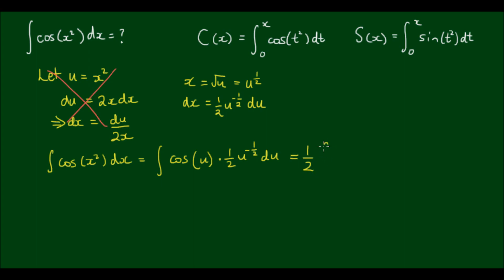And if we tidy this up, I can bring the half out the front: one half times the integral of 1 over root u times cos(u) du. Now we have an integral that's all in terms of u, and you might think that we can easily integrate this using integration by parts. So let's do that.